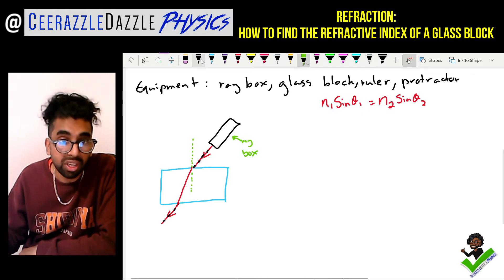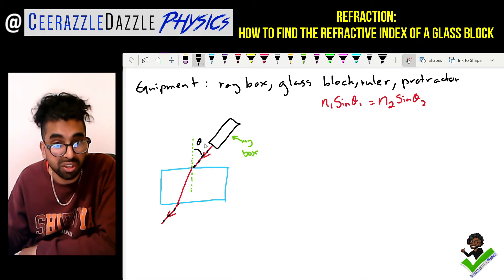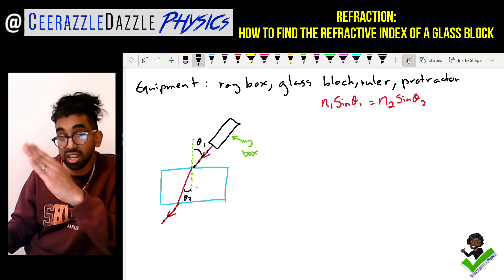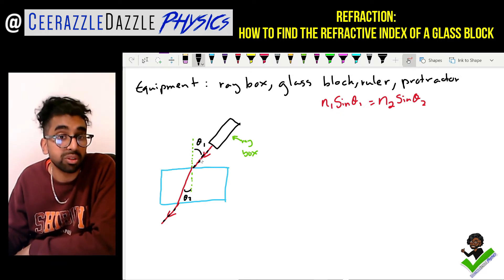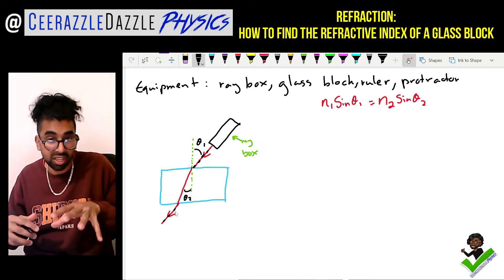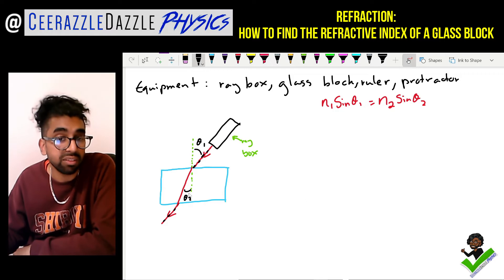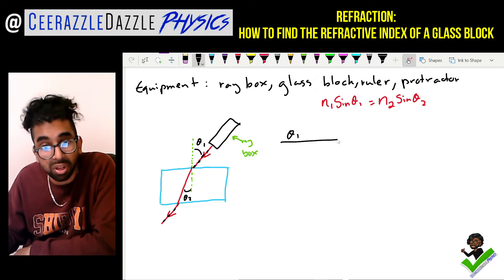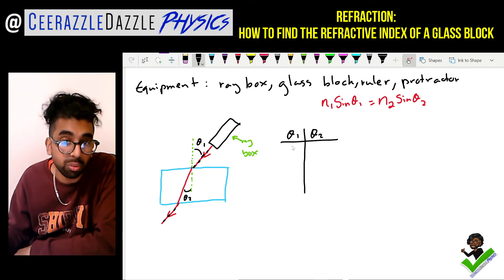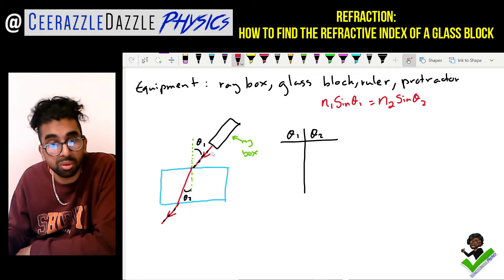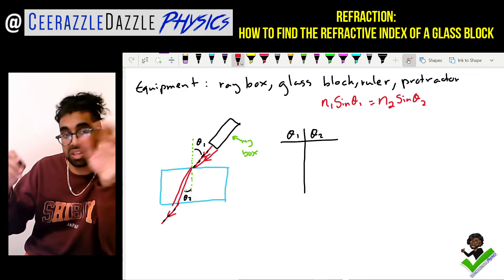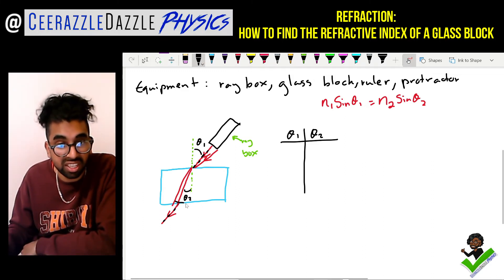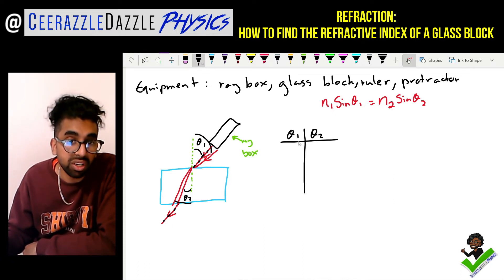In this experiment we're going to change θ1 — the angle of incidence. Maybe you start from 0 and keep going outwards by 10 degrees each time, getting different values of θ1. You mark where the ray comes out, remove the block, draw the lines, and then measure θ2 — the angle of refraction. As θ1 gets larger, θ2 gets larger.